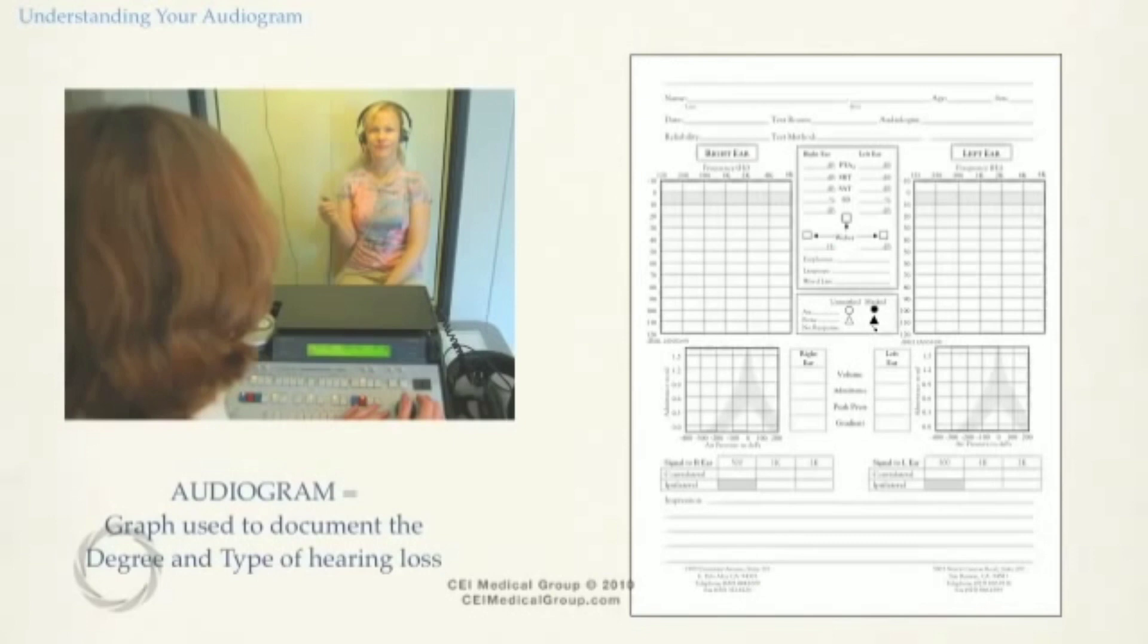This graph is used to document how much hearing loss a person has, otherwise known as the degree of hearing loss, and what part of the ear has been damaged, referred to as the type of hearing loss.